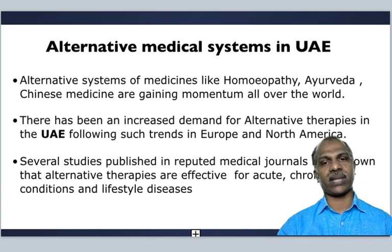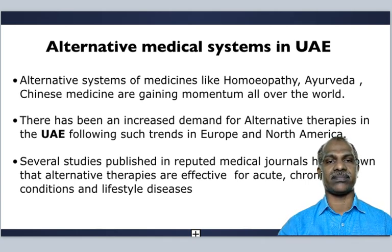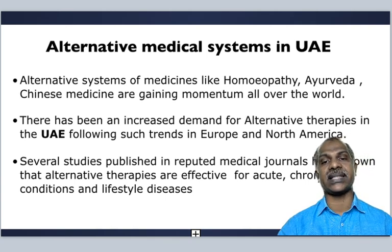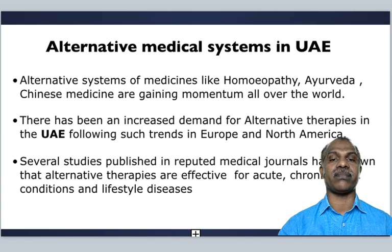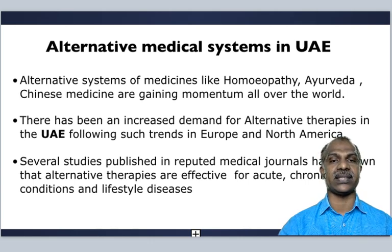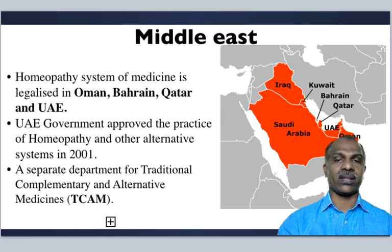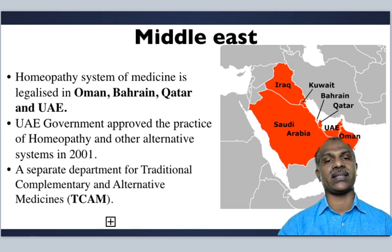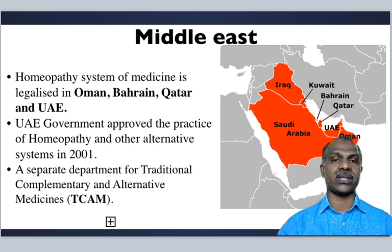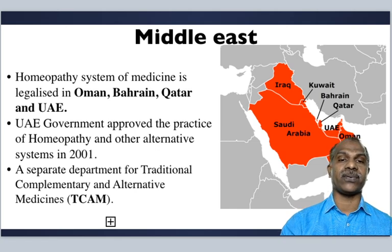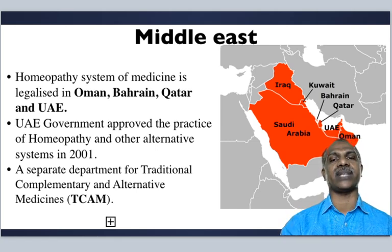Alternative systems of medicine like homeopathy, Ayurveda, and Chinese medicines are gaining momentum all over the world. There has been an increased demand for alternative therapies in the UAE following trends in Europe and North America. Several studies published in reputed medical journals have shown that alternative therapies are effective for acute and chronic conditions and lifestyle diseases. Homeopathy is legalized in Oman, Bahrain, Qatar, and UAE. The UAE government approved the practice of homeopathy and other alternative therapy systems in 2001, and a separate department for Traditional, Complementary and Alternative Medicine (TCAM) exists in UAE.